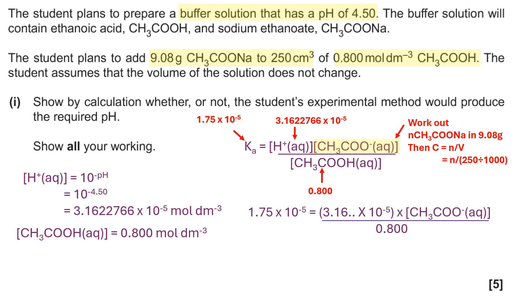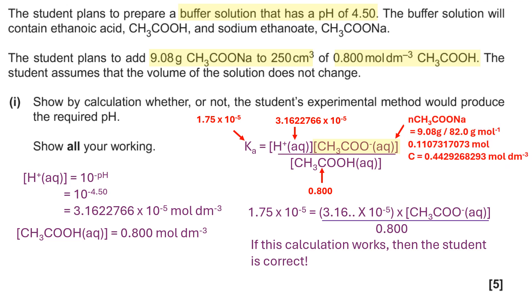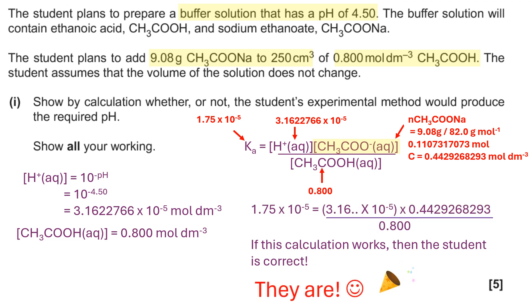Now I've put the numbers in apart from the concentration. So working out the concentration, hopefully what will happen is that the numbers will give you 1.75 times 10 to the minus five if this calculation works and the student's correct. Putting the numbers in and adding them into the expression, it does work, yay! So the person is correct.